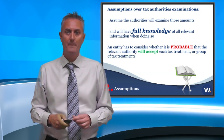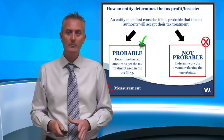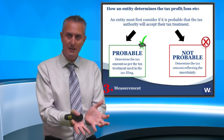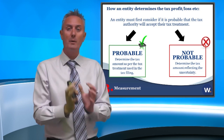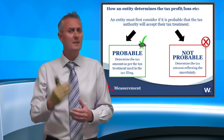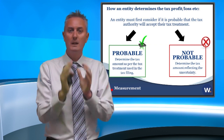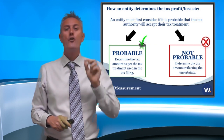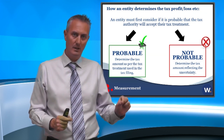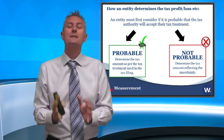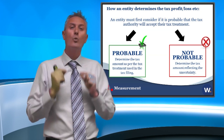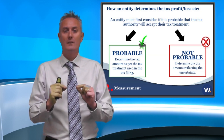Why is this so important? Because it impacts the measurement. If your assessment is that it is probable that you're going to get away with it — we've looked at our tax position and we believe it's probable that the tax authorities would accept that — then you would report your tax and your accounts as you normally have, the same way you've always done it. But what happens if you determine it's not probable? I've done my assessment and I've said: on the basis that the tax authorities have got all the facts and circumstances and have done this assessment, we believe it is not probable that they would accept that treatment.